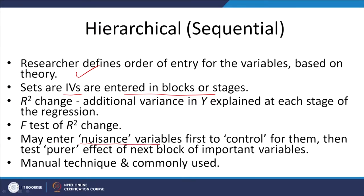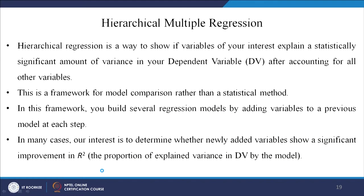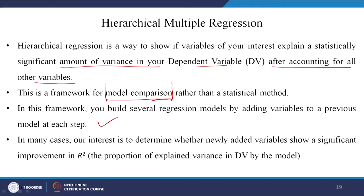Hierarchical regression is an appropriate tool when variance on a criterion variable is explained by predictor variables correlated with each other. It is a popular method used to analyze the effect of a predictor variable after controlling for other variables. Control is achieved by calculating the change in the adjusted R-square at each step. You may enter nuisance variables first to control for them, then test the purer effect of the next block of important variables. Theory is always the most important thing here. It is a framework for model comparison — it helps you not only statistically test but determine which model is best.